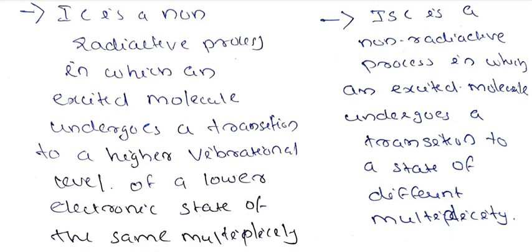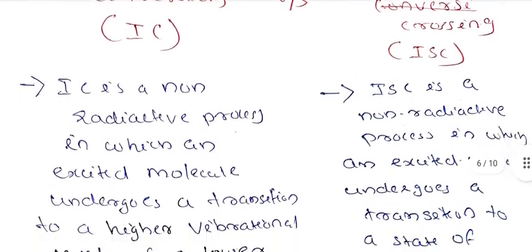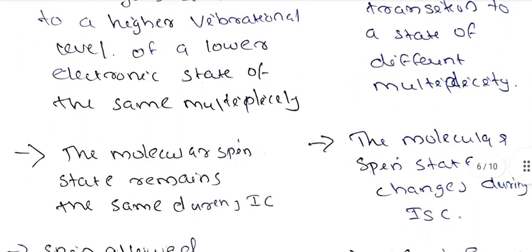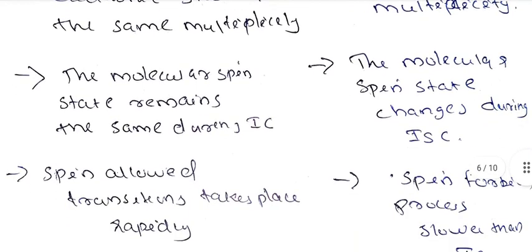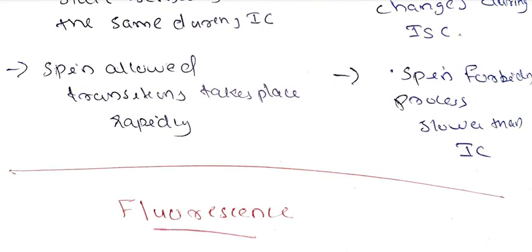In internal conversion, the spin state remains the same. The spin-allowed transition takes place rapidly. The other process is inter-system conversion, which exists in the same way.